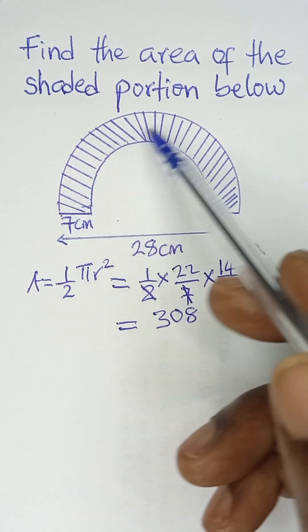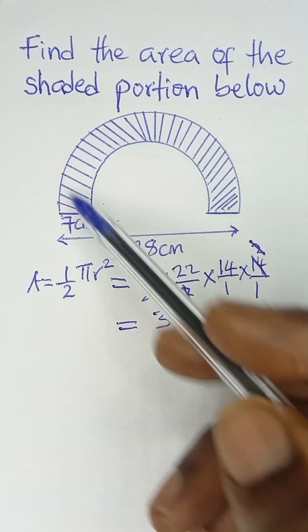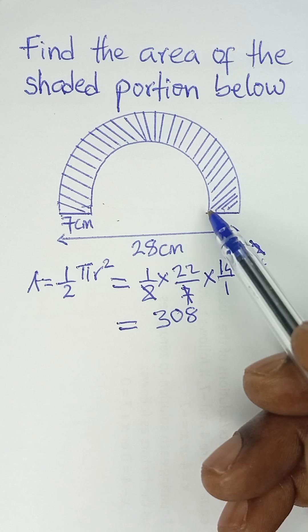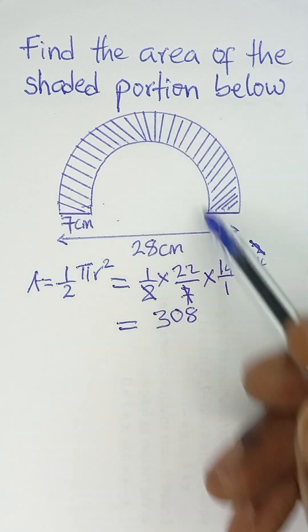So the area of this full semi-circle is 308. Now, for the smaller semi-circle, that is this inner part now.